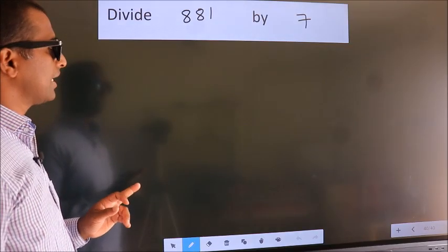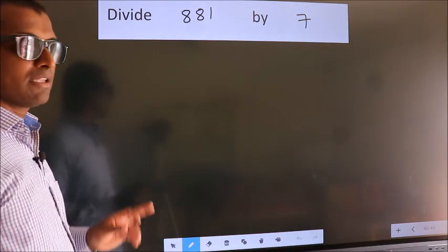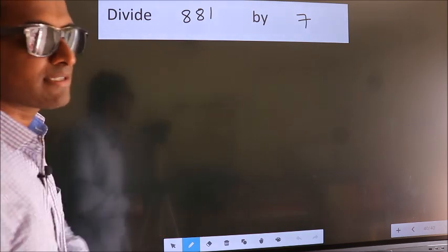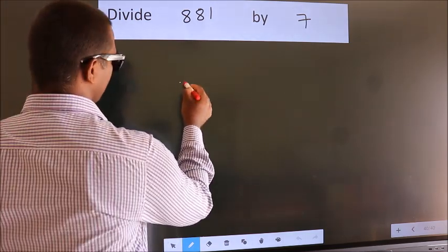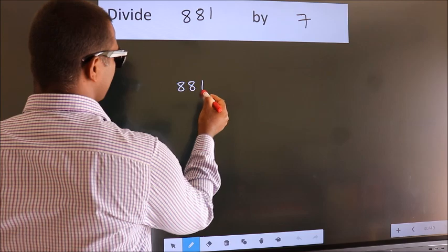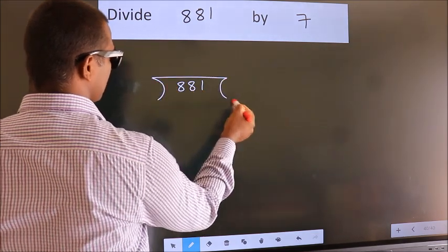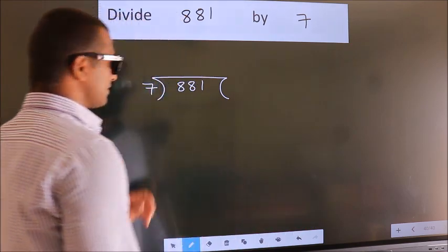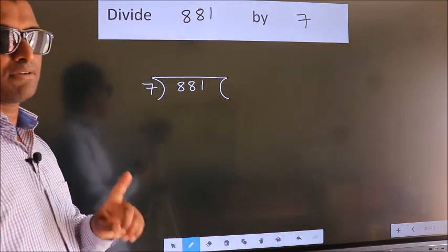Divide 881 by 7. To do this division, we should frame it in this way. 881 here, 7 here. This is your step 1.